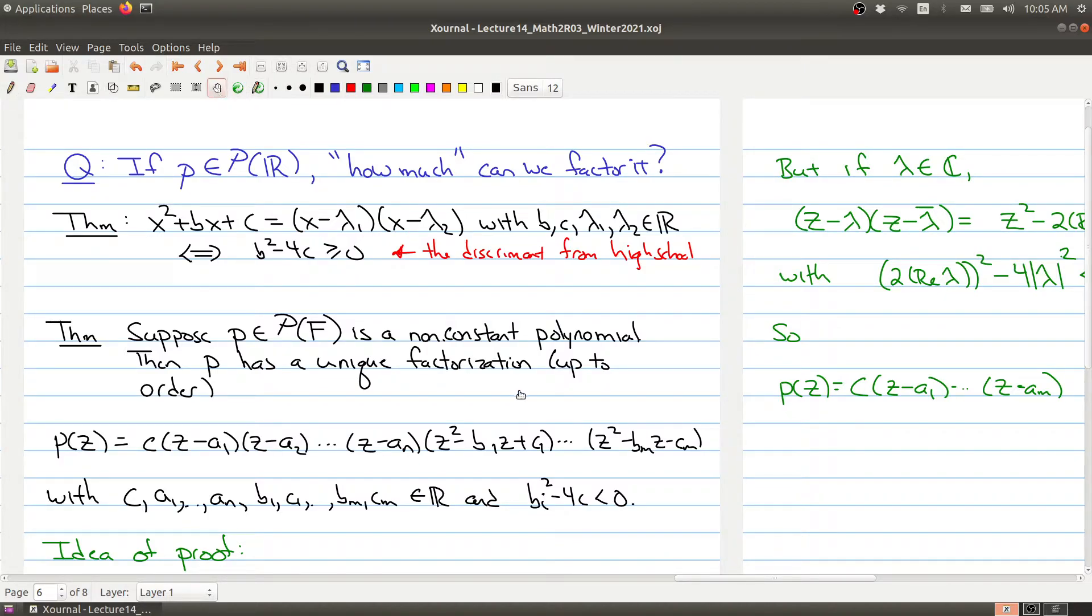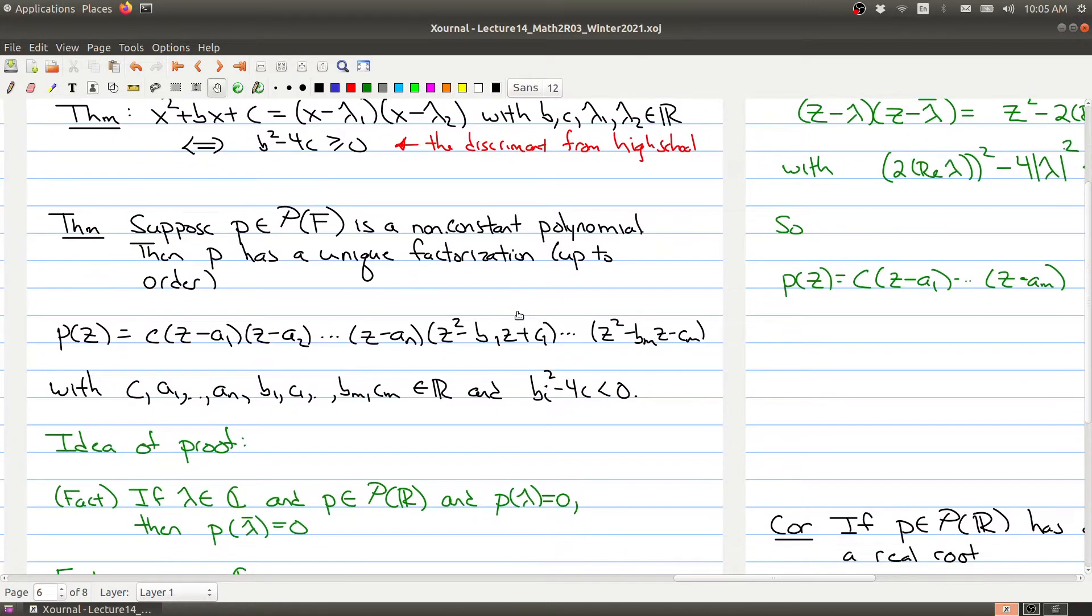Now using this information, the next theorem is basically the analog of the fundamental theorem of algebra for the real numbers. What it says is we can almost factor things up to linear forms. What we get is a product of linear forms and a product of quadratic forms.